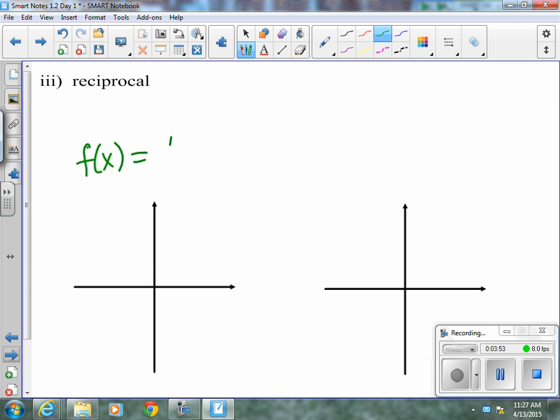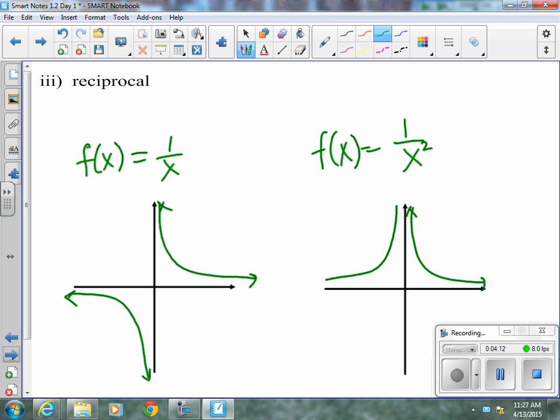Reciprocal, y or f of x equals 1 over x. These tend to have multiple chunks with an asymptote. So, 1 over x looks something like that. 1 over x squared. Similar, except when you square an x value, it becomes positive, so the right and left will match.